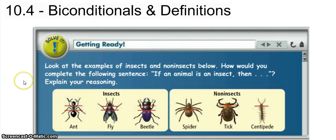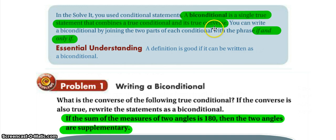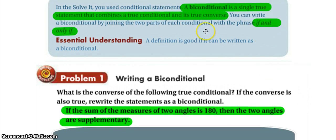We are here in 10.4 looking at bi-conditionals and definitions. A bi-conditional is a single true statement that combines the true conditional and the true converse. We have to have a true conditional and a true converse. You can write a bi-conditional by joining two parts of the conditional with 'if and only if.' We also abbreviate 'if and only if' sometimes with IFF.